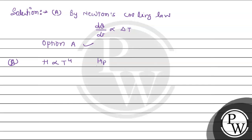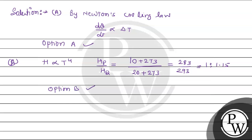Therefore, H of P upon H of Q — for bodies P and Q — the given temperatures in Celsius must be converted to Kelvin. So 10 degrees Celsius becomes 283 K and 20 degrees Celsius becomes 293 K. The ratio works out to 283 divided by 293, and this ratio is 1 is to 1.15. So option B is also correct.